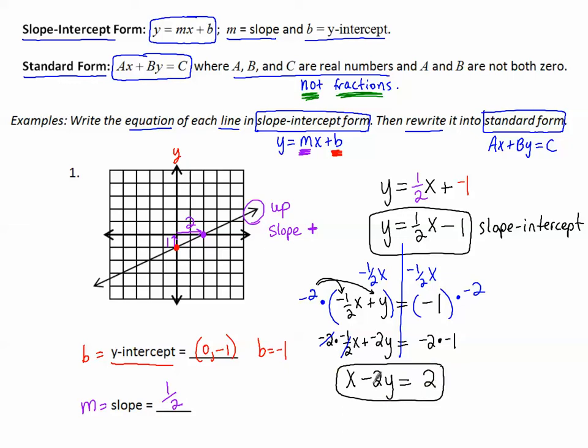I have positive 1x left, minus 2y equals positive 2. I have x and y on the same side, I have no fractions. This is the standard form equation.